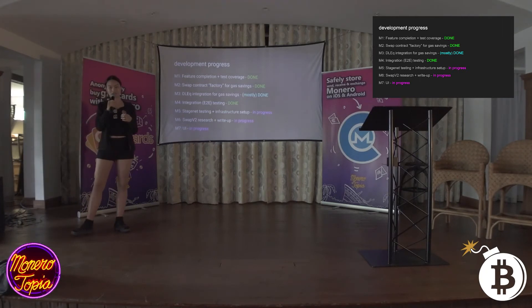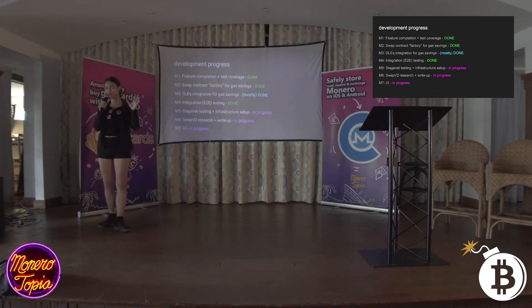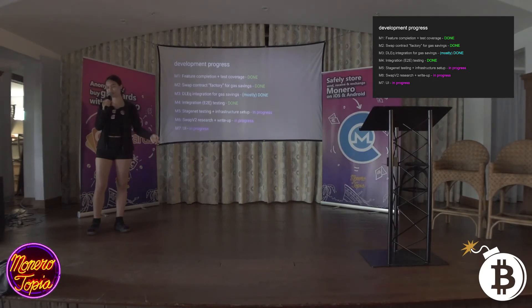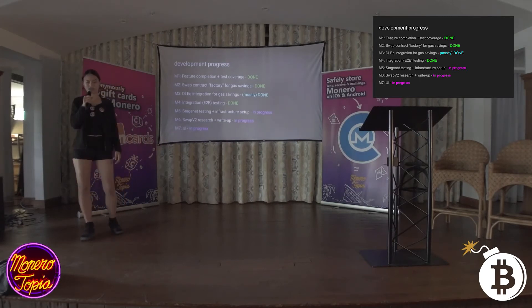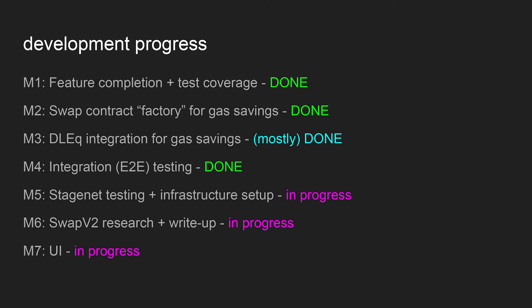Gas is a meter of cost on Ethereum — less gas equals cheaper. In the first iteration the swap contract was a one-time thing you had to deploy every time, which is pretty expensive. Milestone two turned it into one contract deployed once on chain, from which you can call a function to instantiate a new swap — it's probably 3x cheaper to start a swap. Milestone three is discrete logarithm equality integration for further gas saving, a protocol update that allows verifying secp keys on the contract instead of ed25519 keys, which are native to Monero. Since secp is native to Ethereum, it's a lot cheaper.